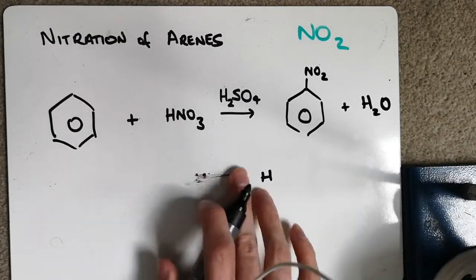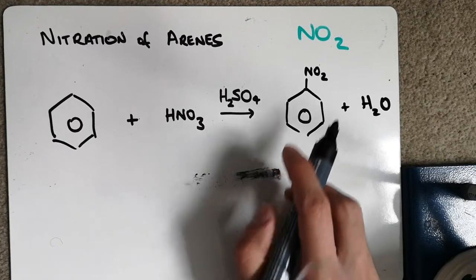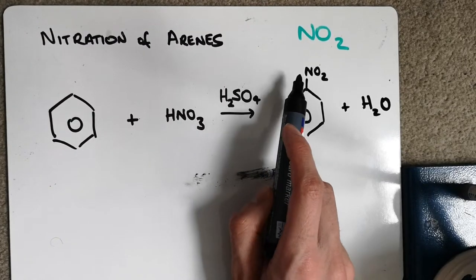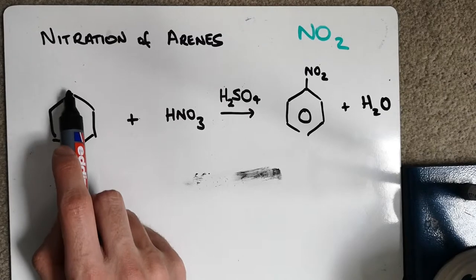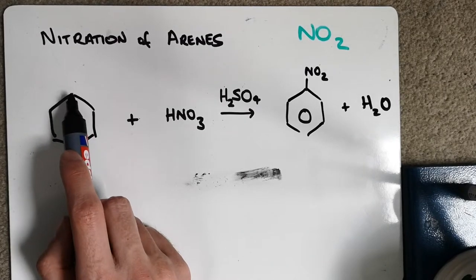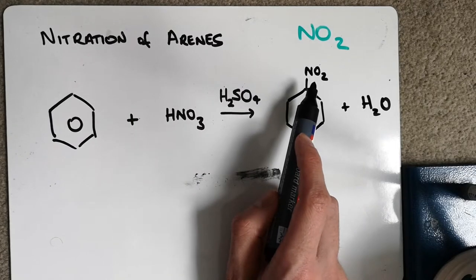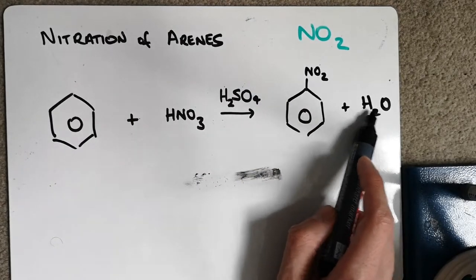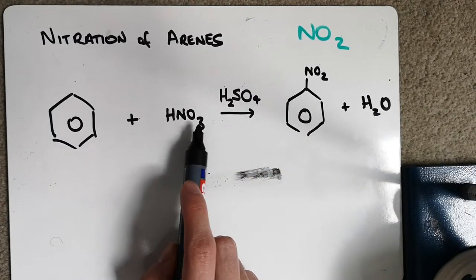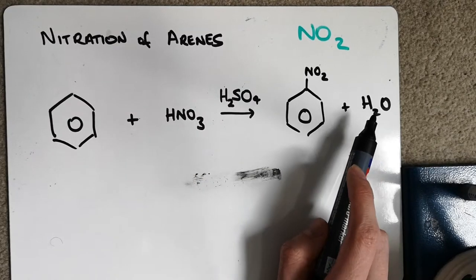And it's known as a substitution reaction. So we're taking the NO2 and we're substituting it with a hydrogen. We don't draw them on in the skeletal version, but there's a hydrogen just there. That's getting swapped with a nitro group. Hydrogen is going into the leftover hydrogen and oxygen to form H2O.